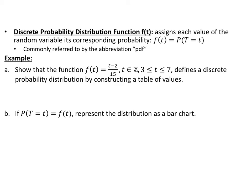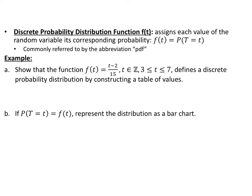The discrete probability distribution function, which uses function notation f(t), assigns each value of the random variable to its corresponding probability. So f(t) equals the probability that your random variable equals whatever t is. It's commonly referred to by its abbreviation PDF — probability distribution function.